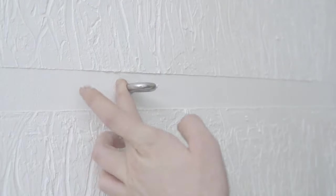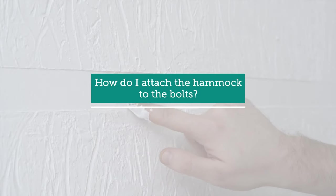Now that our hanging bolts have been attached to the wall or ceiling, the final question is, how do I attach my hammock to them?